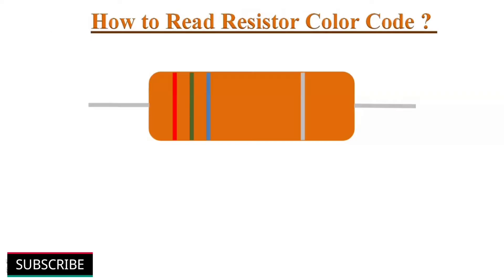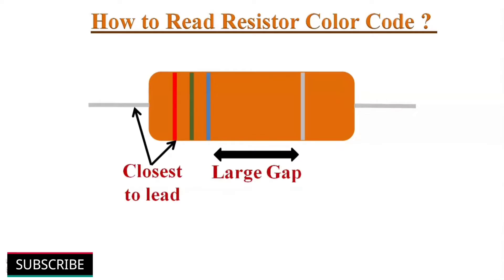The first thing we need to know is how to read or decode the resistor color code. To read them, we have to hold the resistor in the correct direction. Generally, the color band placed closest to the lead is considered the first band, the next is the second band and so on. Another way is that the extra space between two bands also indicates the reading direction.